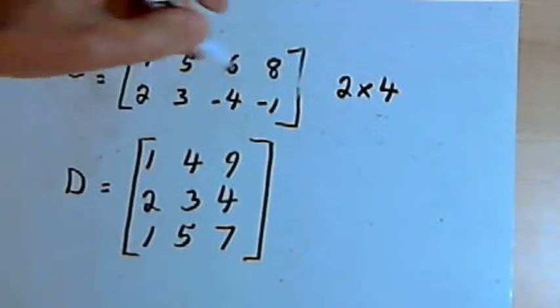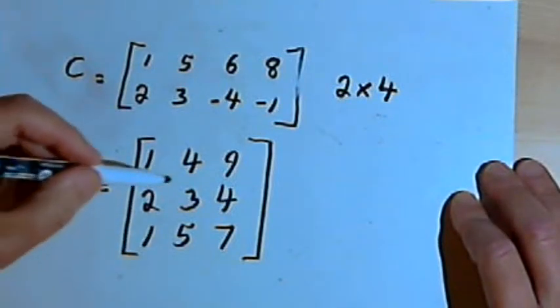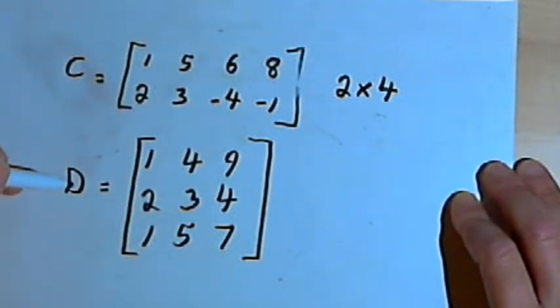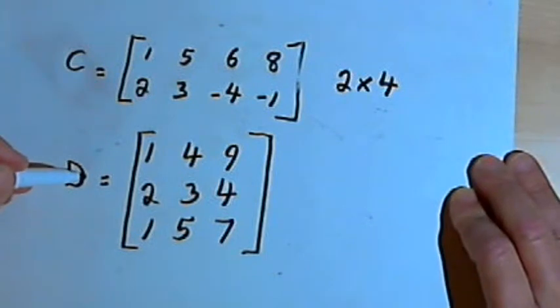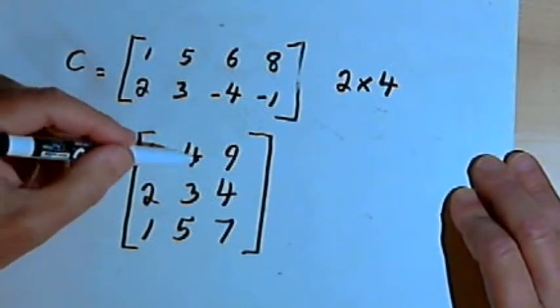We always start with the number of rows and columns. If we have the same number of rows and columns, then we have a square matrix. So matrix D is a square matrix. It's got three rows and three columns.